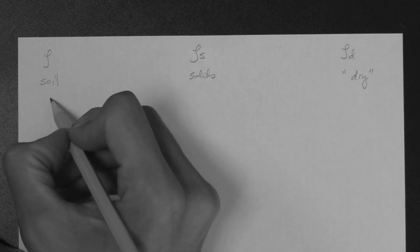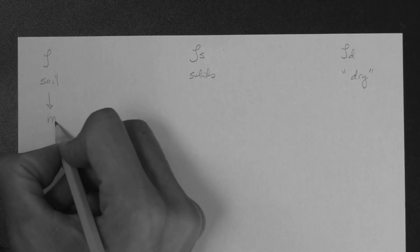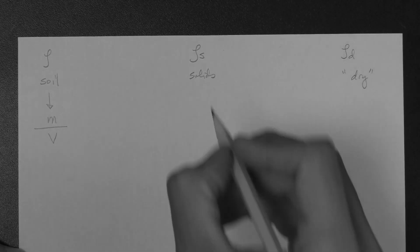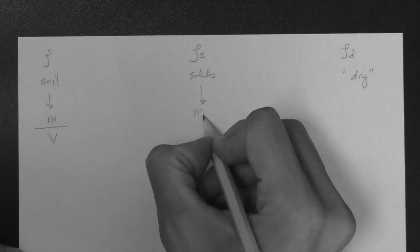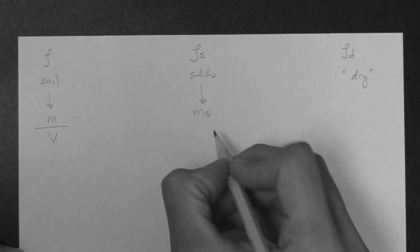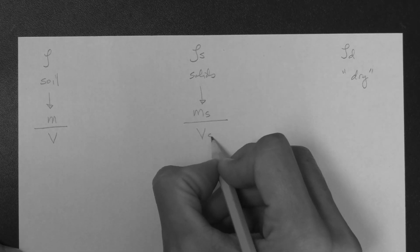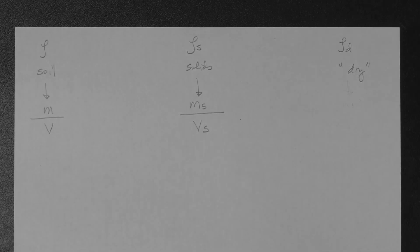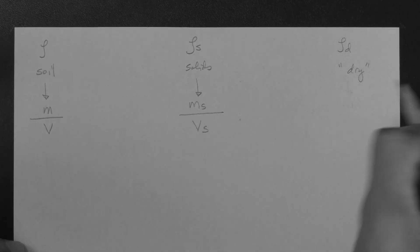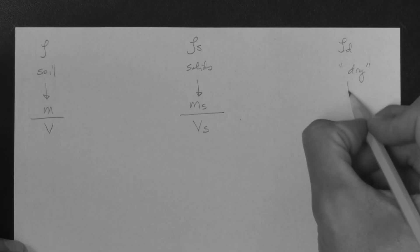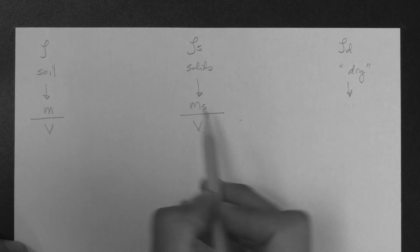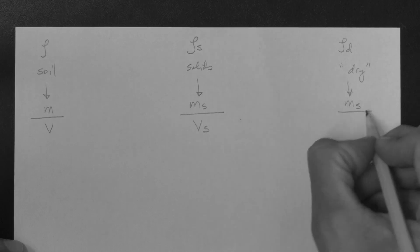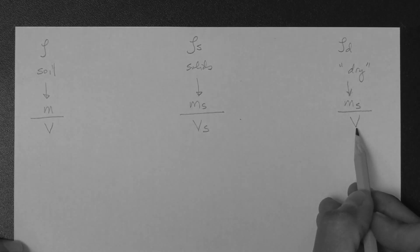The mass density of the soil is the mass of the soil divided by the volume occupied by the soil. The mass density of solids is the mass of the solids divided by the volume occupied by those solids — remember, the solids are the particles. The dry mass density is unusual in the sense that the subscripts do not match: it is the mass of solids divided by the volume occupied by the soil.